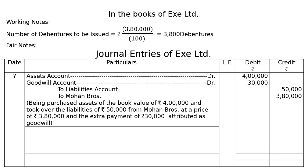The narration will be: purchased assets of the book value of Rs. 4 lakh and took over the liabilities of Rs. 50,000 from Mohan Brothers at a price of Rs. 3,80,000, and the extra payment of Rs. 30,000 attributed as goodwill. Please write down the narration in this way only.